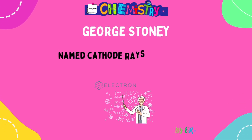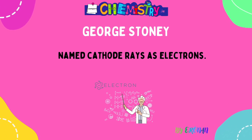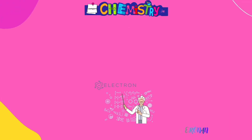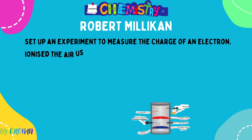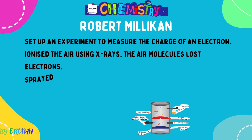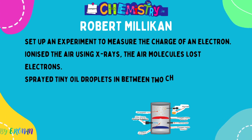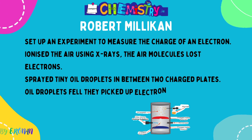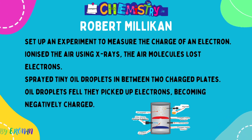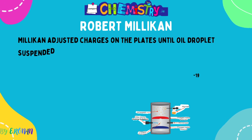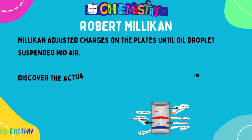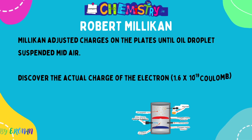Following Thomson, George Stoney actually named the cathode ray particles as what we refer to them today — he named them electrons. Next, Robert Millikan conducted his oil drop experiment to measure the charge of an electron. He ionised the air using X-rays, meaning air molecules lost electrons and became ions. He then sprayed tiny drops of oil between two charged plates; as the oil droplets fell, they picked up electrons and became negatively charged. Millikan adjusted the charges on the plates until the oil droplets were suspended mid-air, discovering the actual charge of the electron to be 1.6 × 10⁻¹⁹ Coulombs.